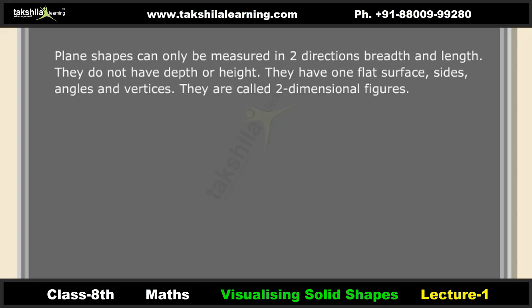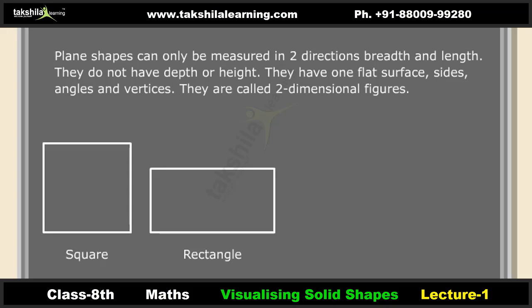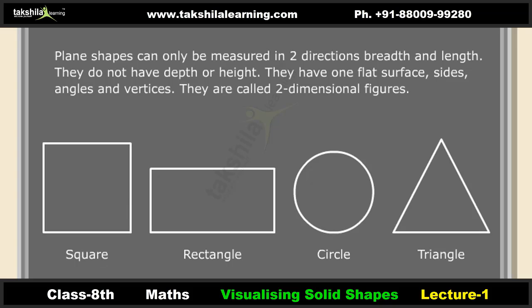Plane shapes can only be measured in two directions: breadth and length. They do not have depth or height. They have one flat surface, sides, angles and vertices. They are called two-dimensional figures, such as square, rectangle, circle, and triangle.